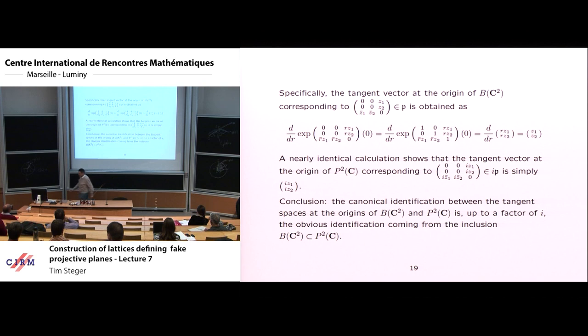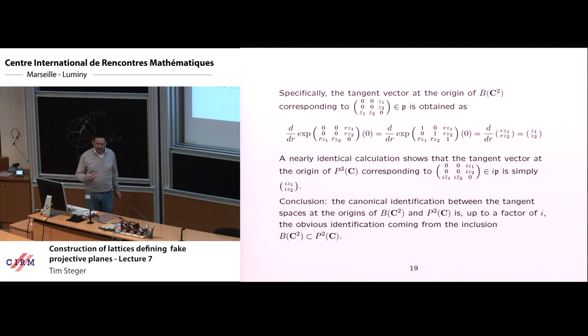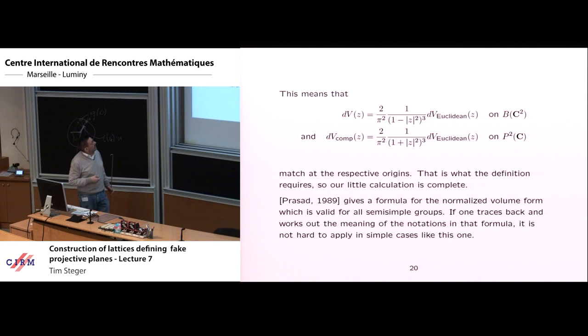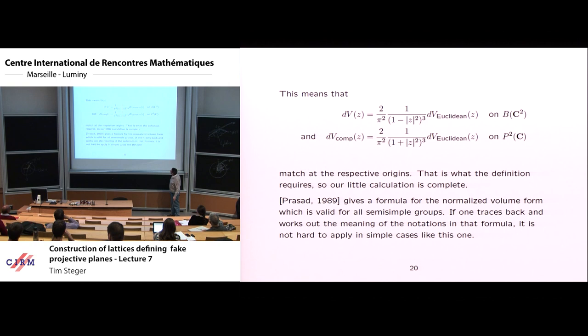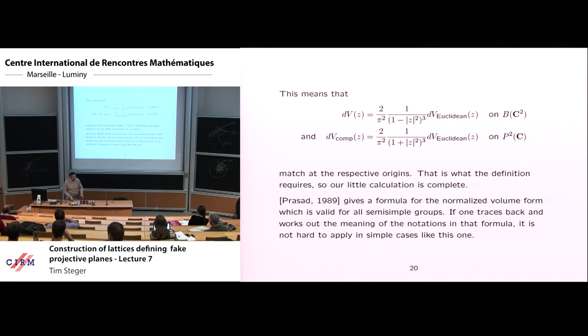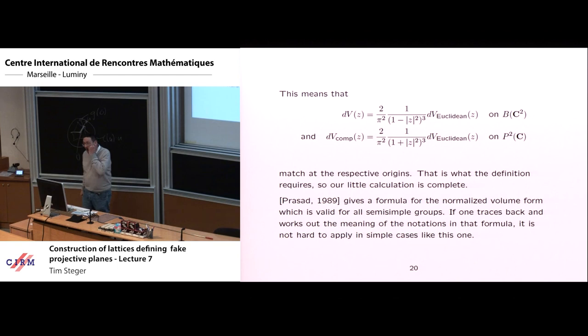In the statement of the Hirzebruch proportionality theorem, this is the recipe. This means that the two volume elements actually match at the origin. At the origin, when Z = 0, the two Euclidean things match, and so these two particular forms match, which is what the definition requires — what the proportionality principle requires. So our little calculation is complete. I don't know how many of you have done this exercise for yourselves, but there's not much to it, just a bit of calculus. Thank you.